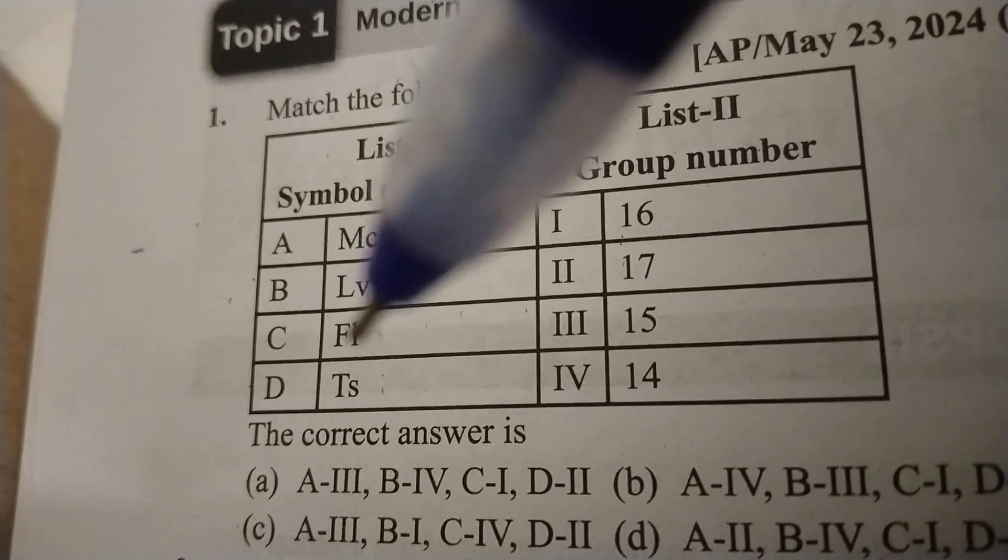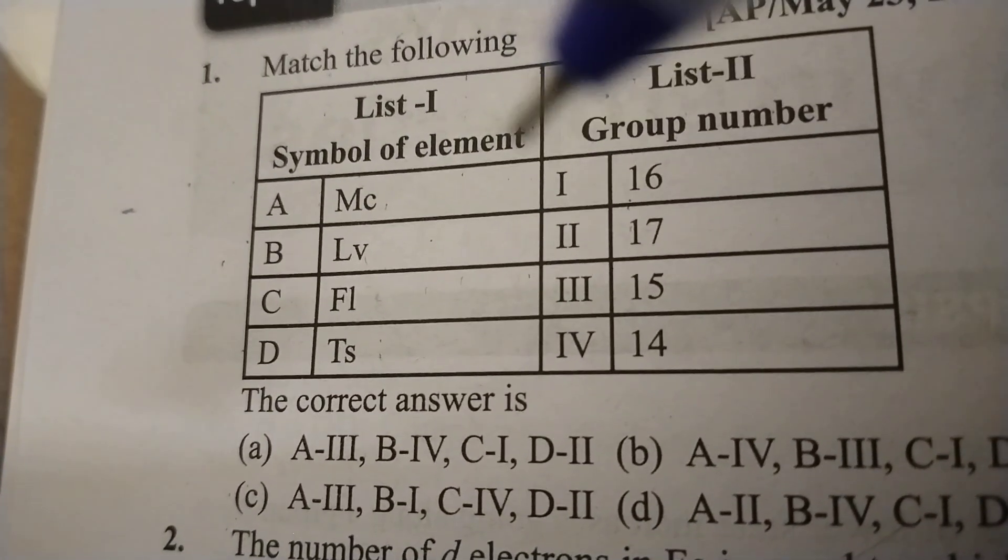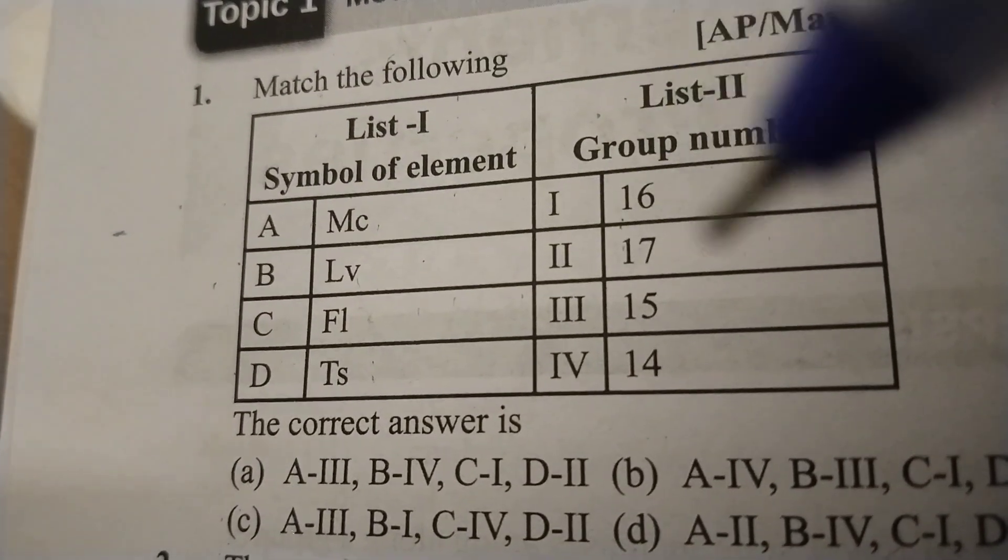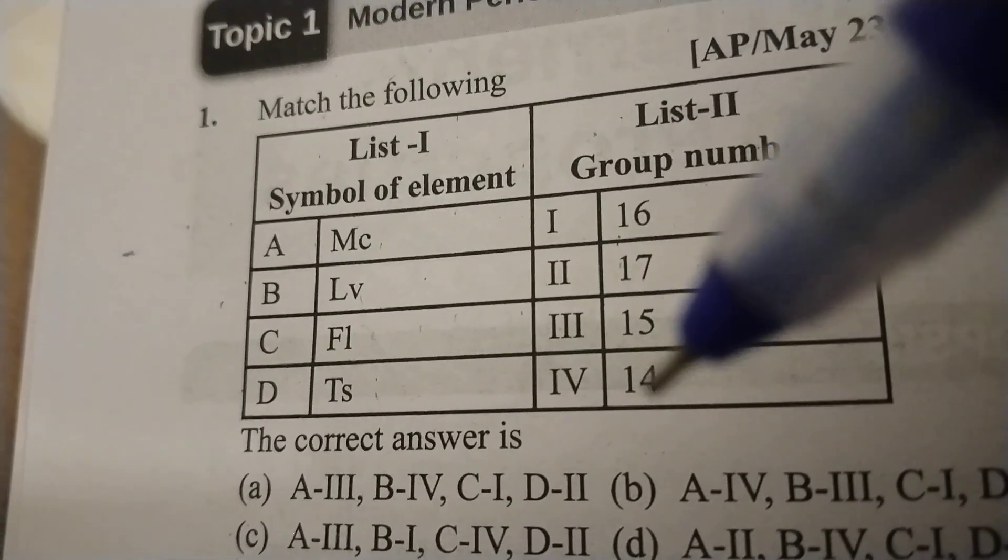Flerovium, Flerovium - group 14, please note it. Flerovium group 14, so atomic number 114, group 14 is the right answer, carbon family.